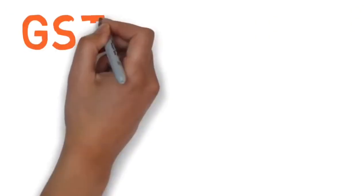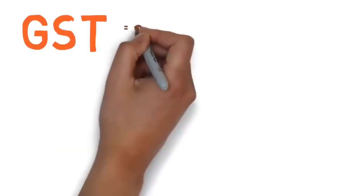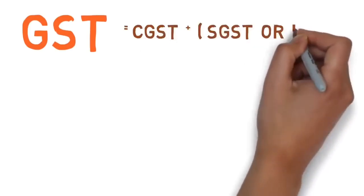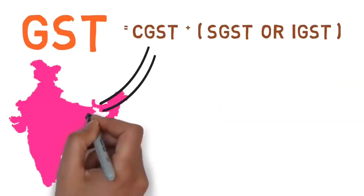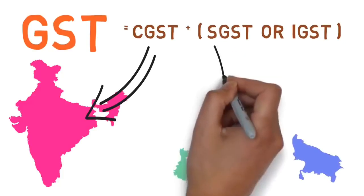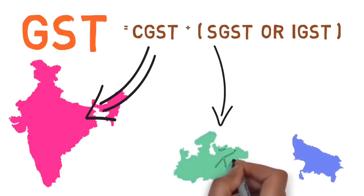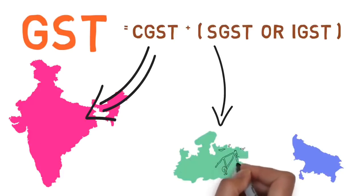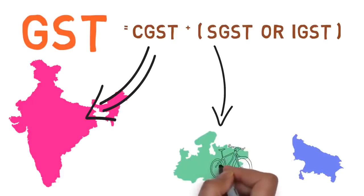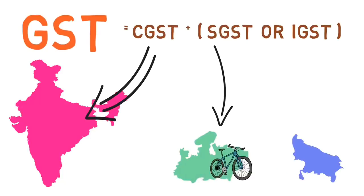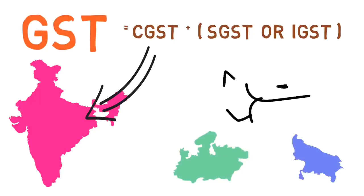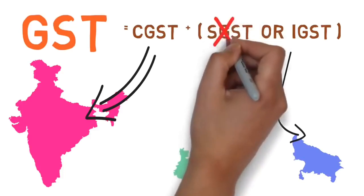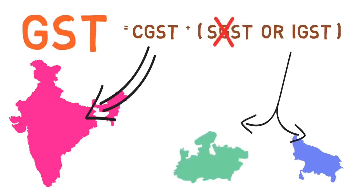Let's take GST in detail. GST is the combination of CGST and SGST or IGST. CGST is Central GST which is paid to the Central Government. SGST is the State GST which is paid to the State Government. And IGST is the Integrated GST which applies when goods and services move interstate. For example, if a product is manufactured in Madhya Pradesh and sold in another state, IGST applies and is distributed between both the governments. In this case, SGST will not be collected.